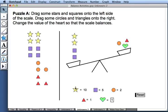So we know the values of the star and the squares, and we know the values of the other shapes. But our scale doesn't balance. Our goal is to make the scale balance by changing the value of the heart.